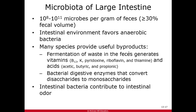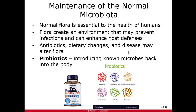We want to maintain our normal flora because they can do great things — they prevent infections since there's only so much food and space. They don't want any other organisms taking hold, so we want to keep them happy. This is called microbial antagonism: if any pathogenic bacteria wants to take claim to your intestines, mouth, or skin, the normal flora is there first and provides a battle for space and resources to try to prevent new organisms from growing.